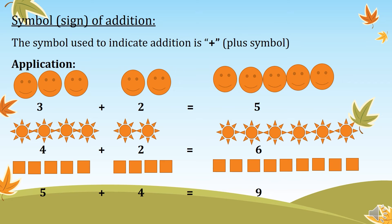We have two groups of happy faces. The first group contains three happy faces, and the second group contains two happy faces. The sum of the first and the second group is one, two, three, four, five. The sum of the first and the second group is a group of five happy faces.